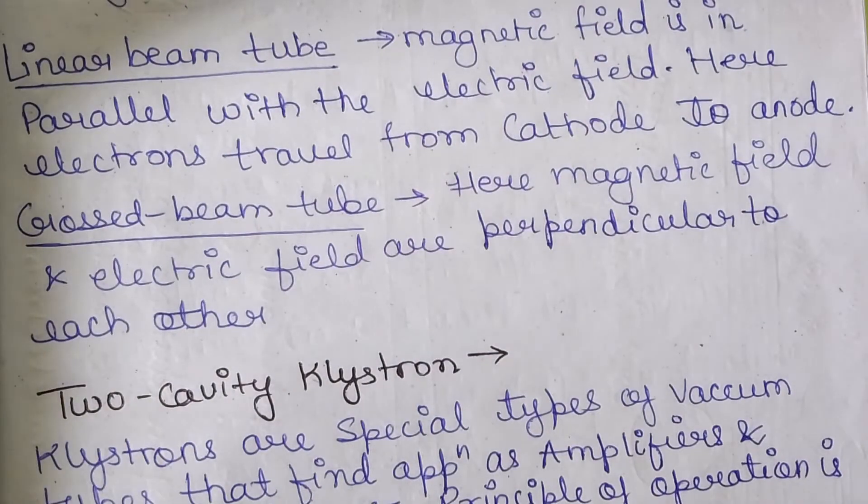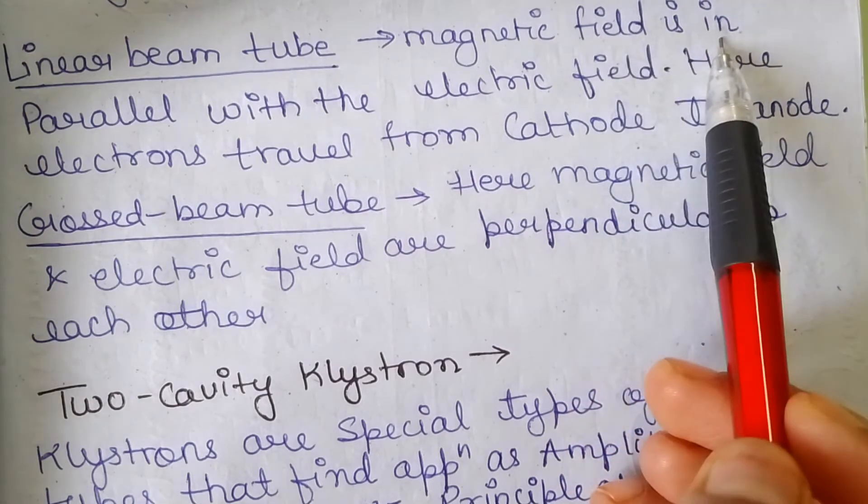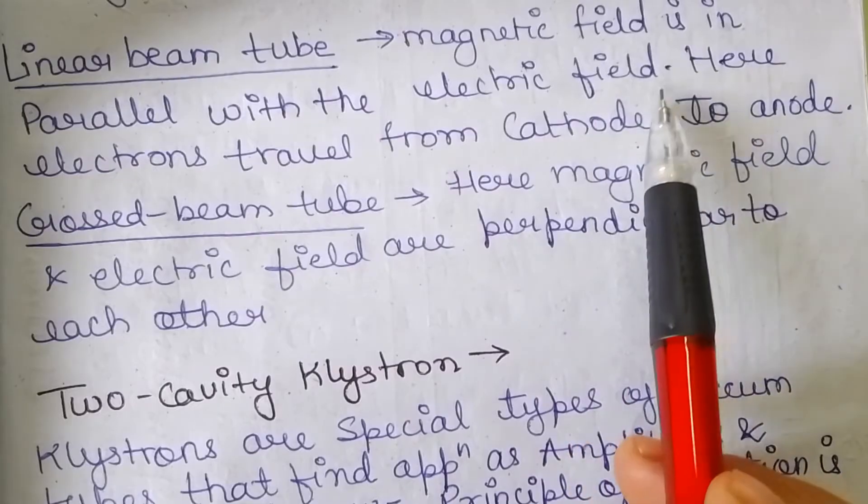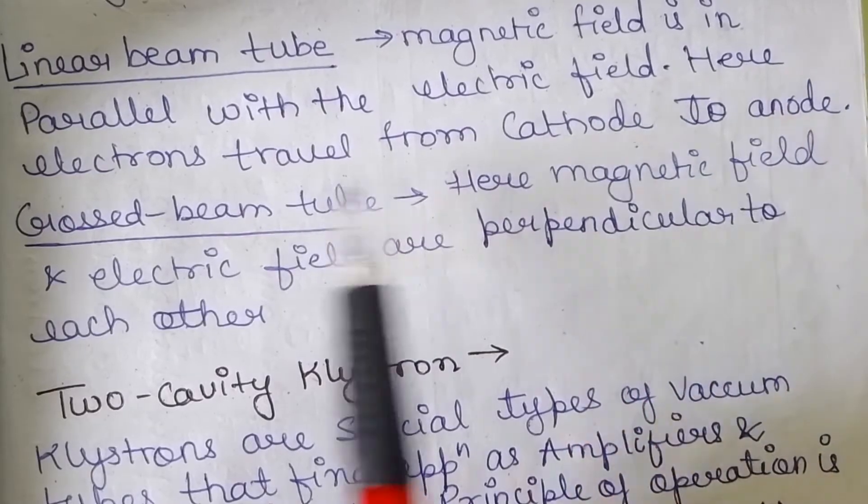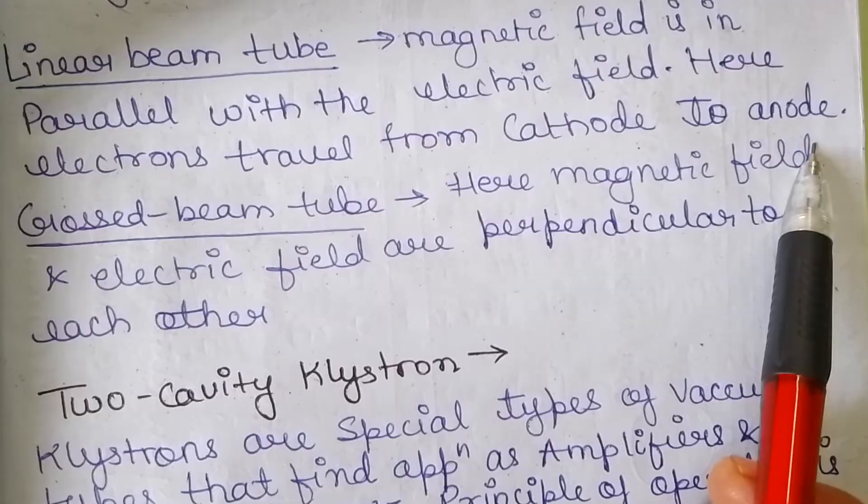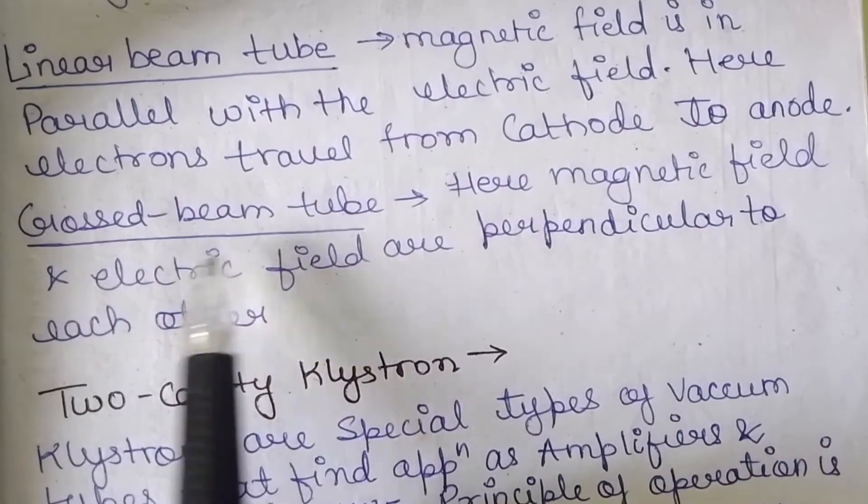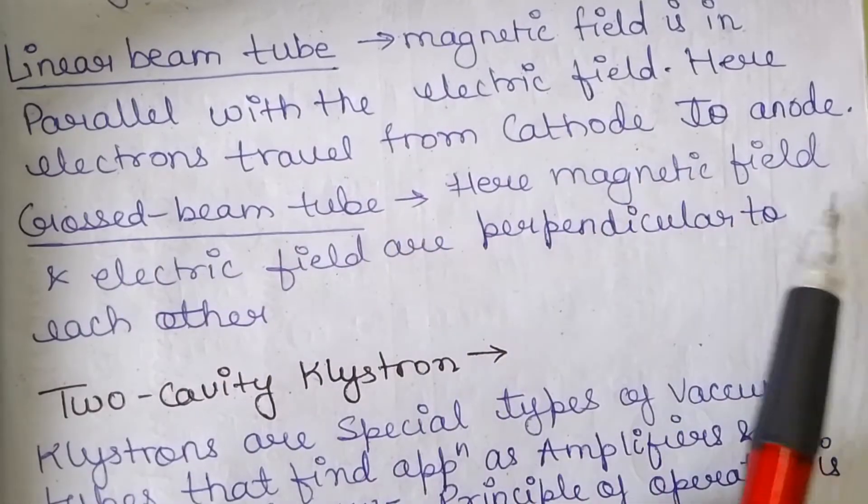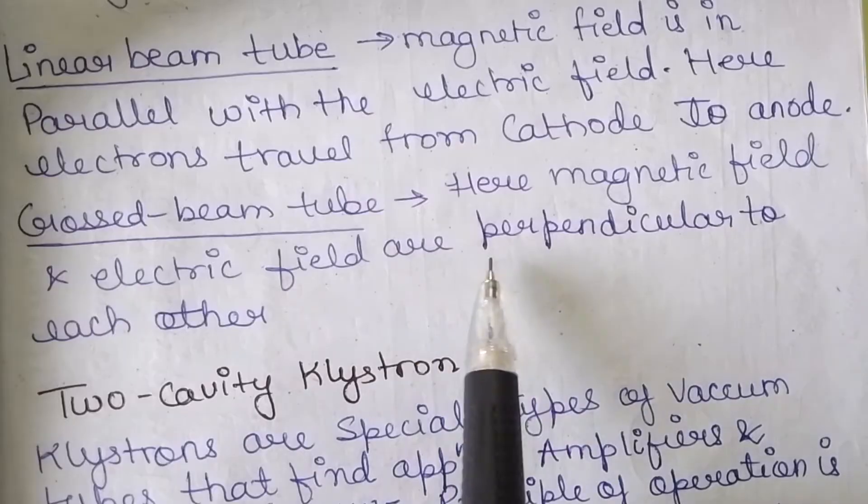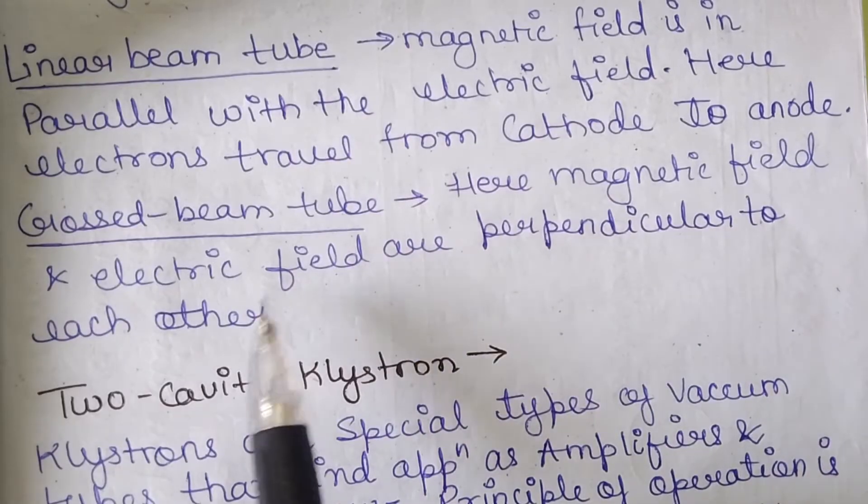Now, let's know about the linear beam tube. In this type of tube, the magnetic field is in parallel with the electric field and here, the electrons travel from cathode to anode. Now, the cross beam tube. In this, the magnetic field and electric field are perpendicular to each other.